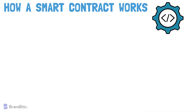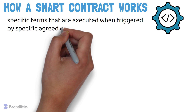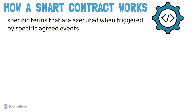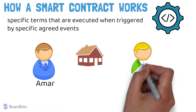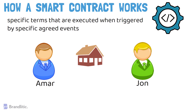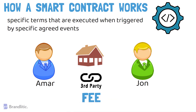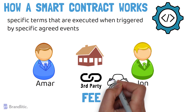This code behind a smart contract contains specific terms that are executed when triggered by specific agreed events. Let's take an example: Amar is renting an apartment in Mumbai and John from New York is looking to rent an apartment for his journey there. Typically, Amar and John would have used some platform that unites hosts and guests to agree on renting. This kind of platform would serve as a third party and would take responsibility for compliance with the agreed terms, while also charging both Amar and John a fee. Besides, if either of them fails to fulfill their commitments, dispute resolution may be time-consuming and might require a detailed review.